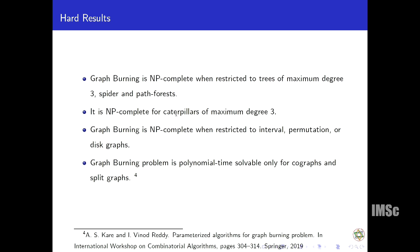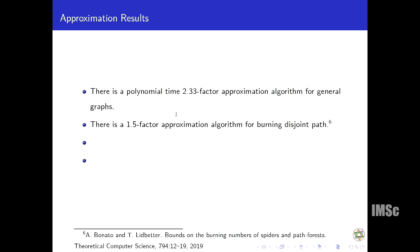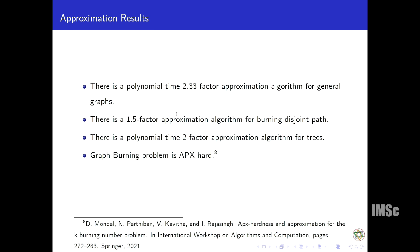Let us look at the approximation results where we are looking for a near optimal solution. For general graphs we have a 2.3 factor approximation algorithm. For disjoint paths we have 1.5 factor approximation algorithm. For trees we have a 2 factor approximation algorithm, and this problem is FPT hard.